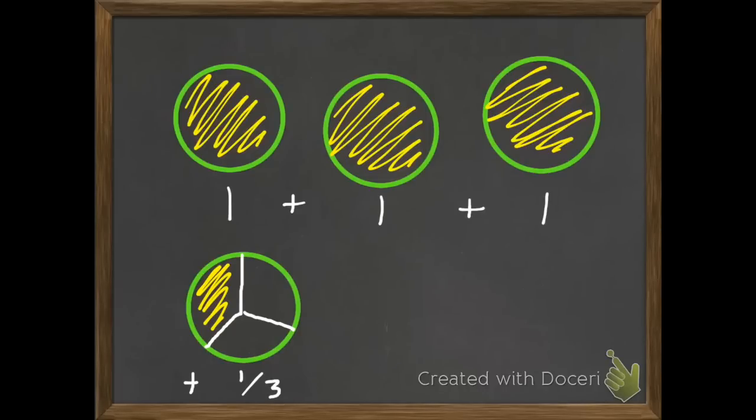Then our fraction, we have a circle cut into three equal pieces. One is shaded, so that's one third. So one plus one plus one plus one third. So what's that going to equal when we mix those together? It's going to be three wholes and one third, or three and one third.